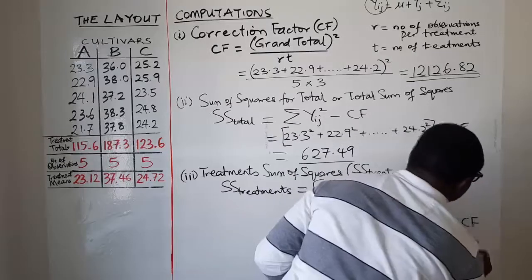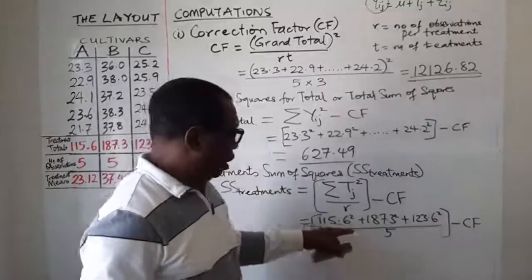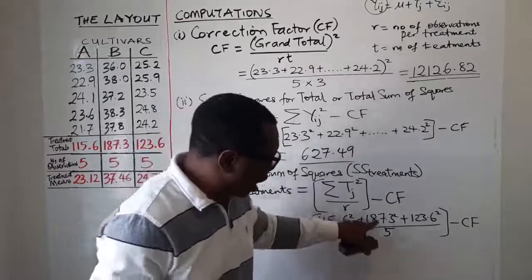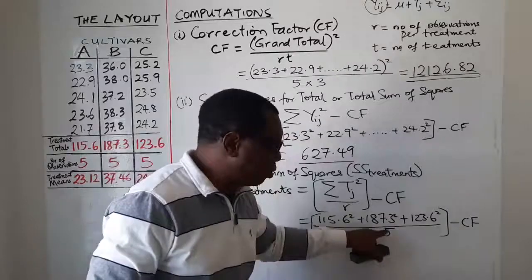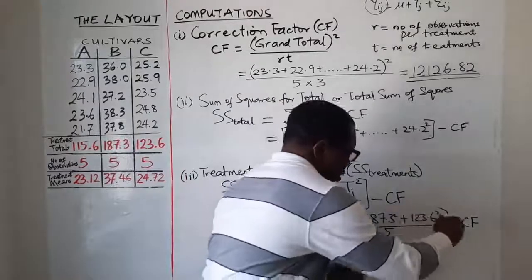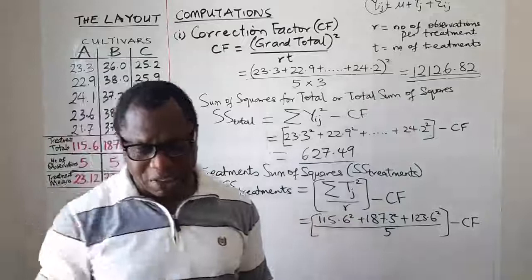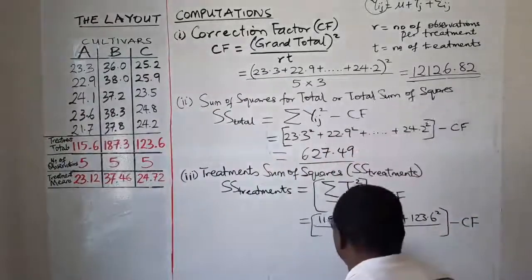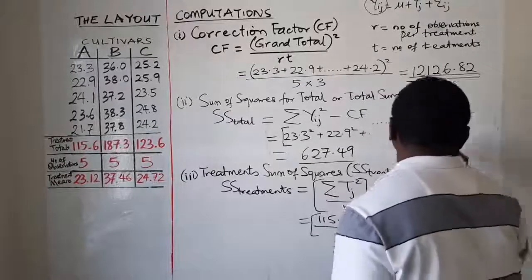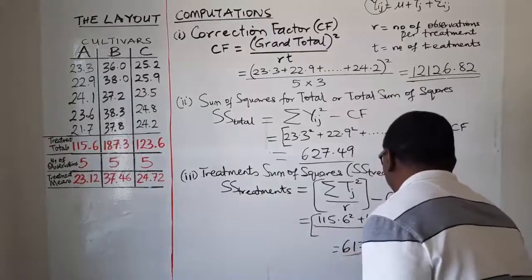When you subtract CF from that, you must make sure you square, add, and divide by five before subtracting CF — that is why the braces are important, to ensure you do that step first before subtracting. When you do that, your answer will be 617.50. That is our final answer for SS treatments.